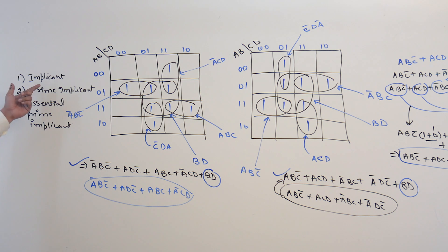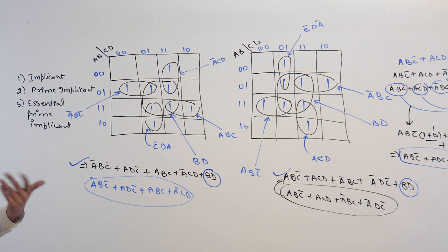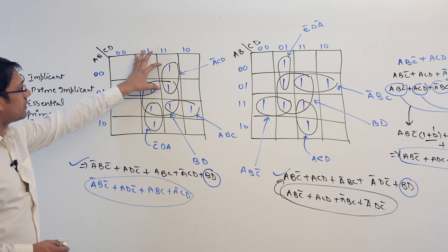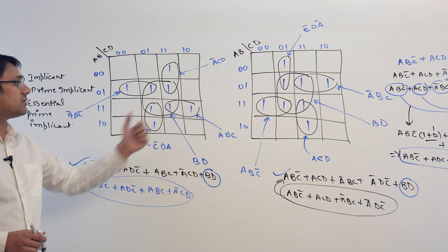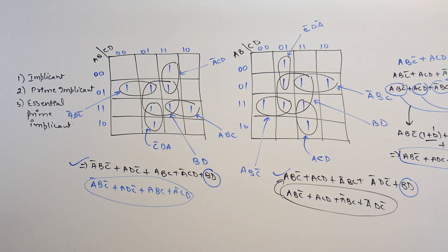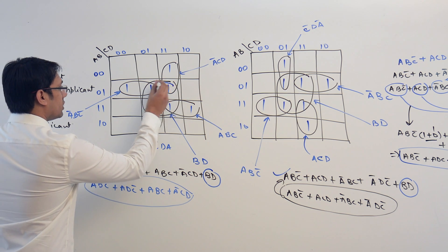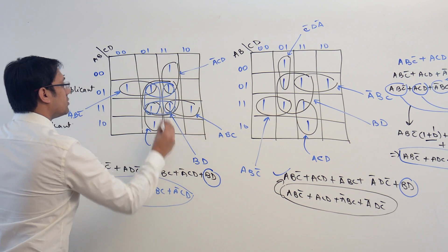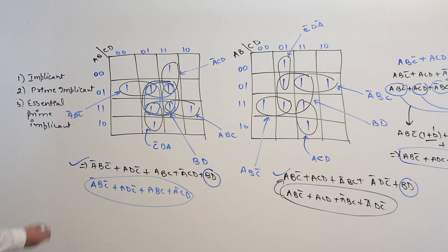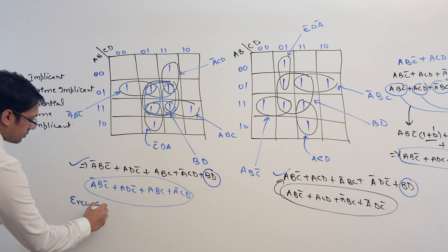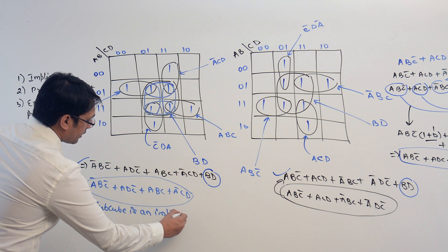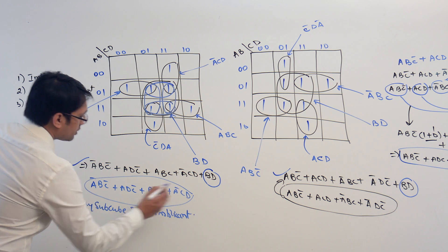What is an implicant? An implicant is — every subcube creates an implicant, or every subcube forms an implicant. For example, we have this subcube — this is an implicant, we have this subcube — it is an implicant, we have this subcube — it is an implicant, this is an implicant. Even if you make a smaller subcube, this is an implicant, this is an implicant, even this is an implicant. So every subcube is an implicant.